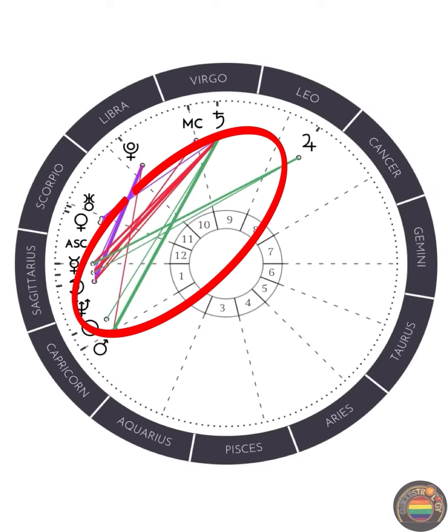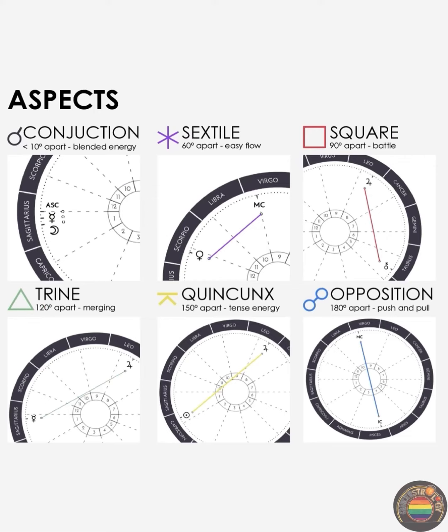See all these colorful lines going all over the place? Those are aspects. Depending on the degree, they represent different kinds of feelings on how those focus points interact with each other.